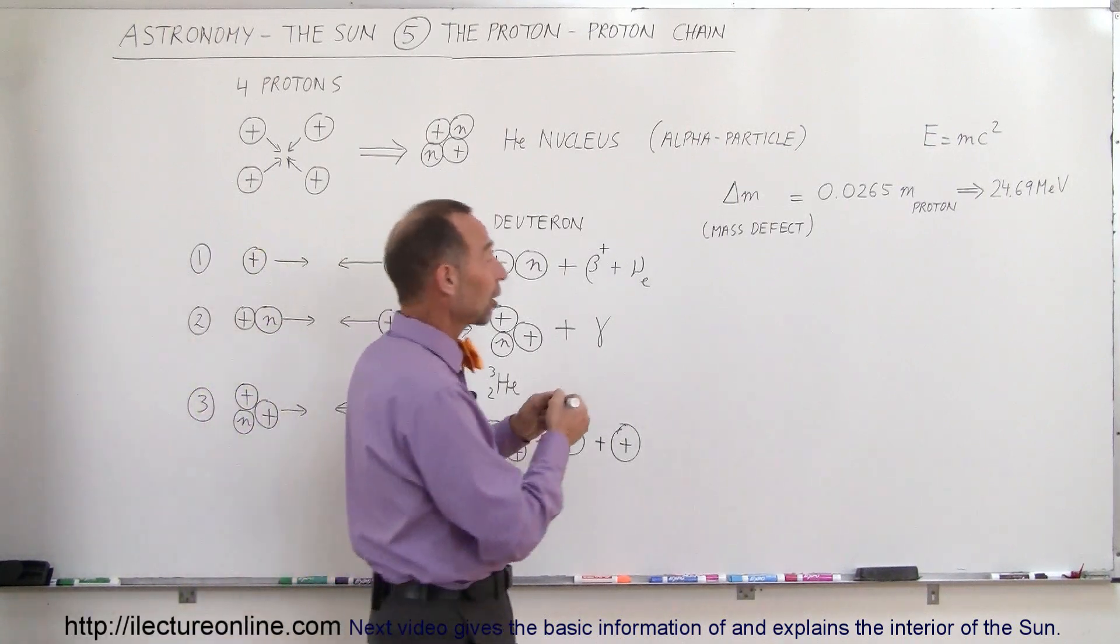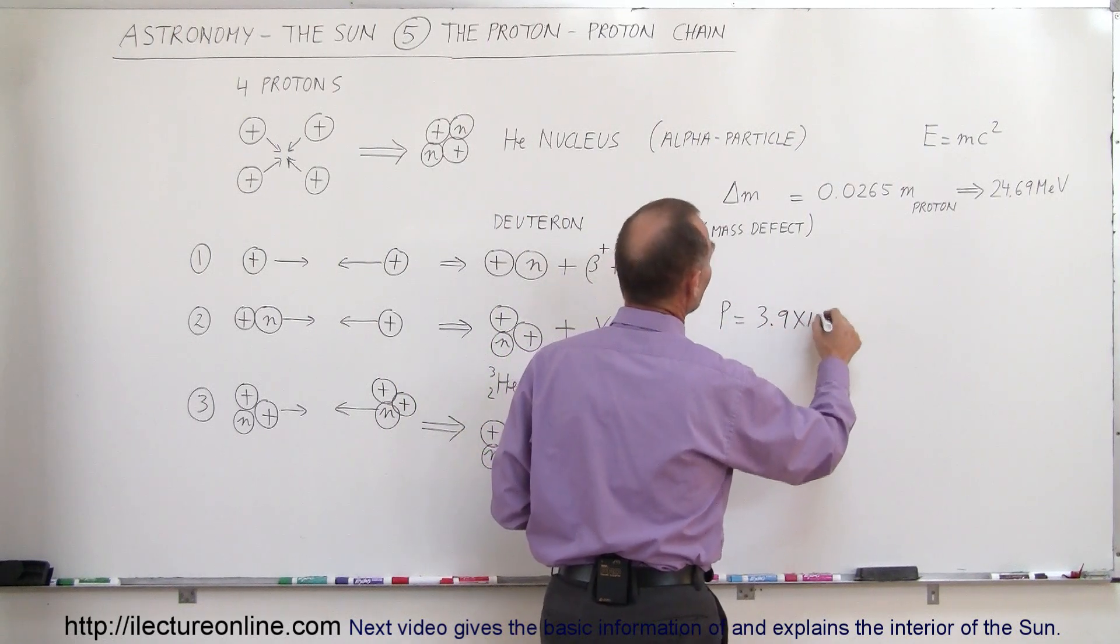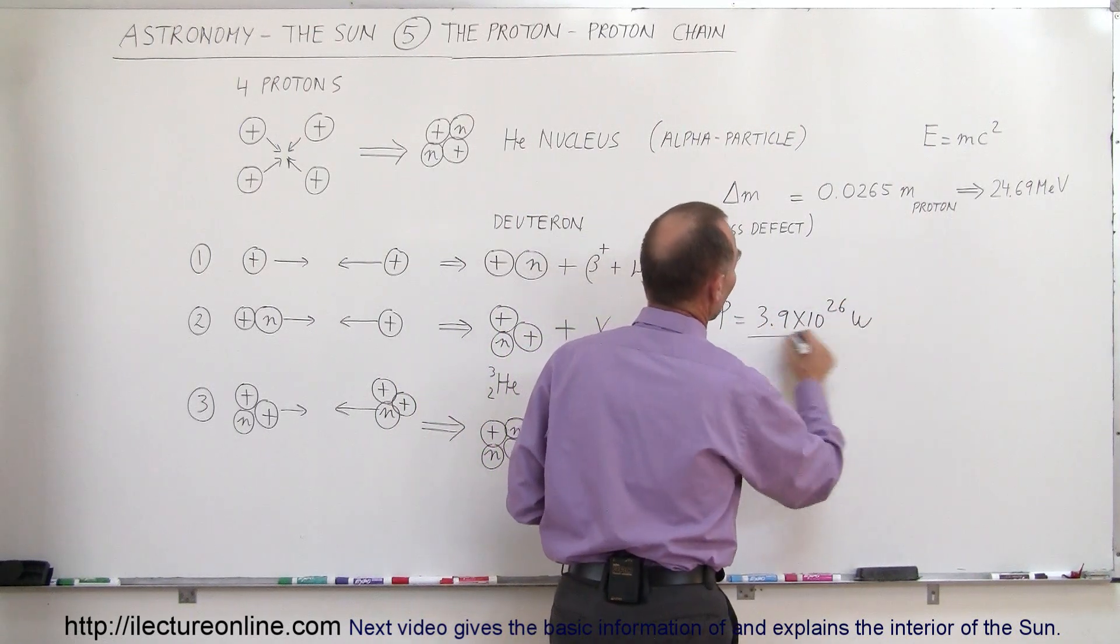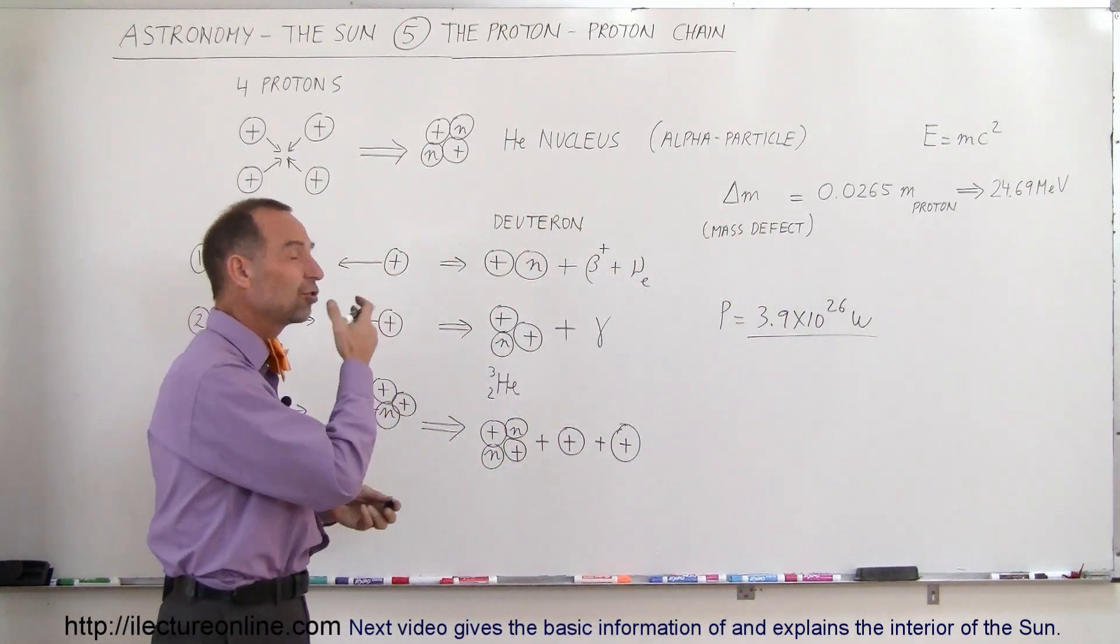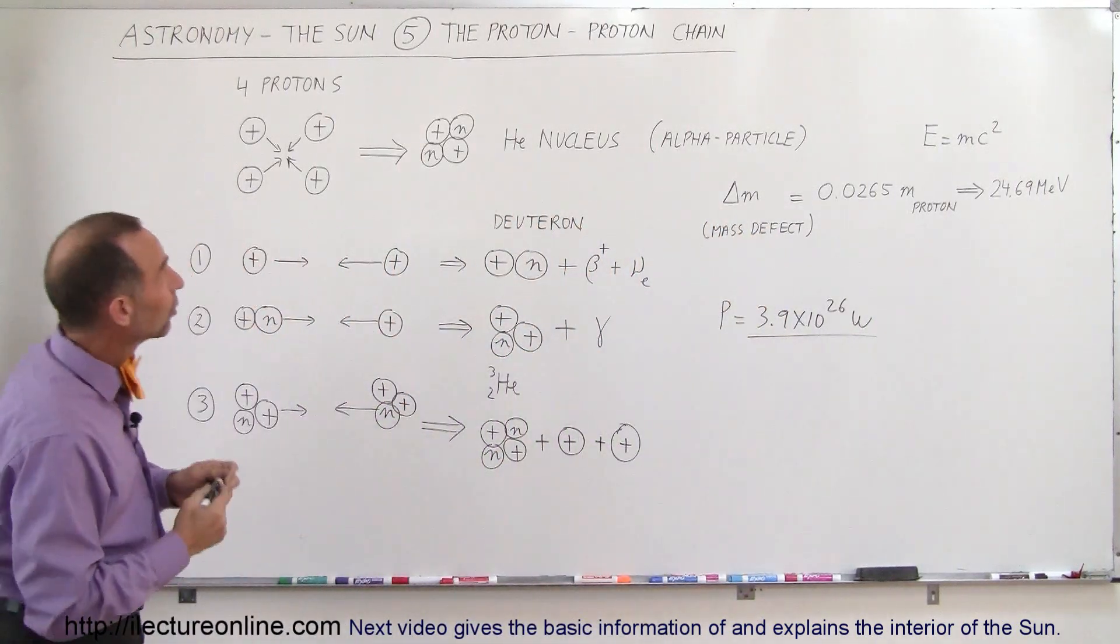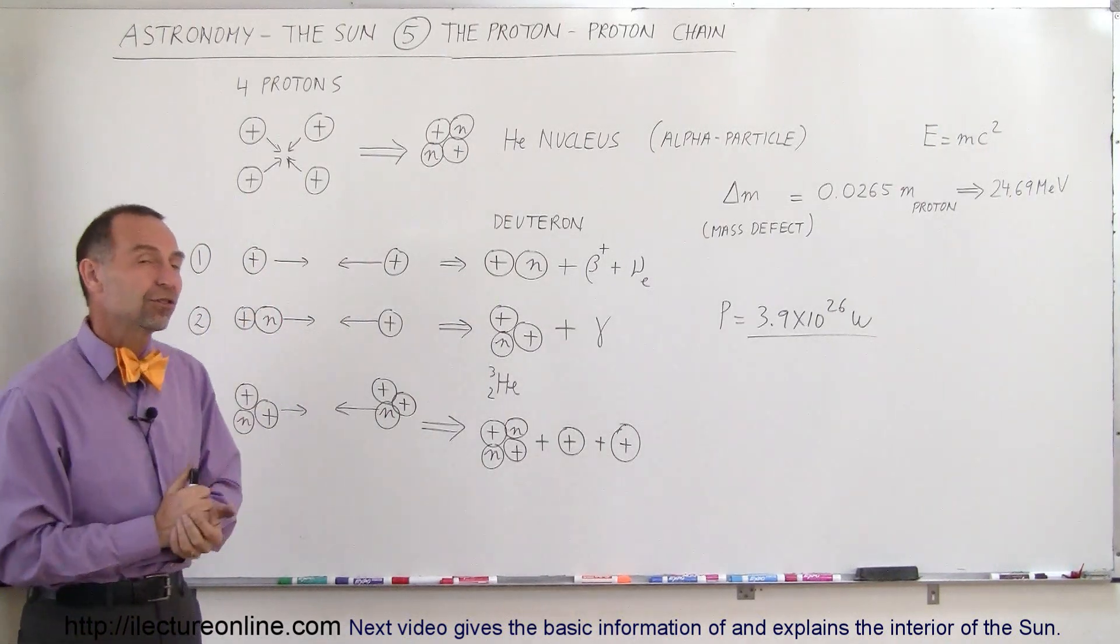The total energy production or the power of the sun is about equal to 3.9 times 10 to the 26 watts. So that's how much power the sun produces through this proton-proton chain reaction of nuclear reactions at the center of the sun.